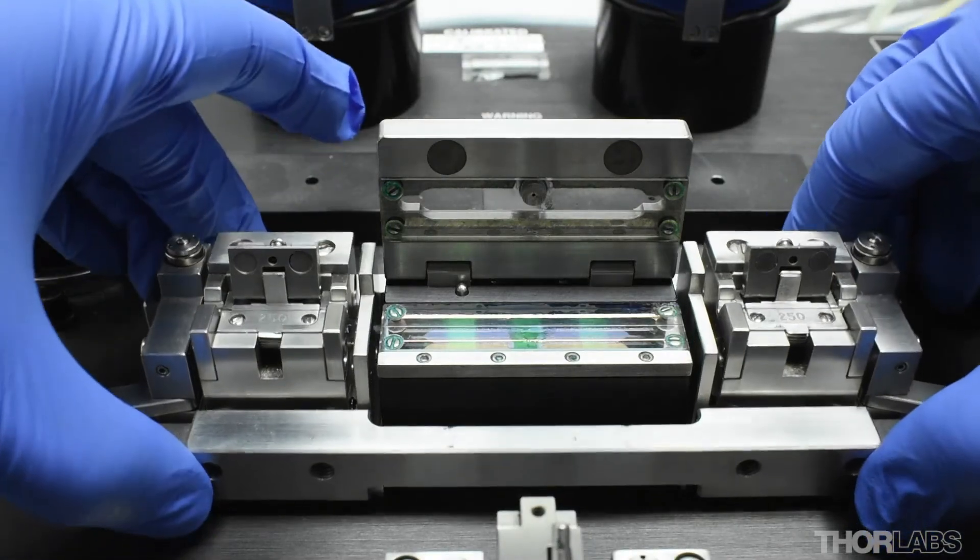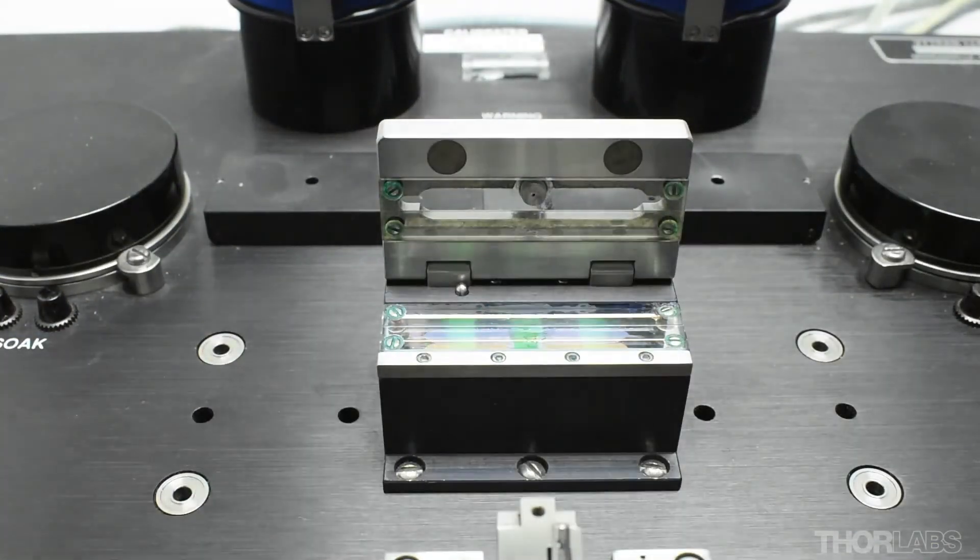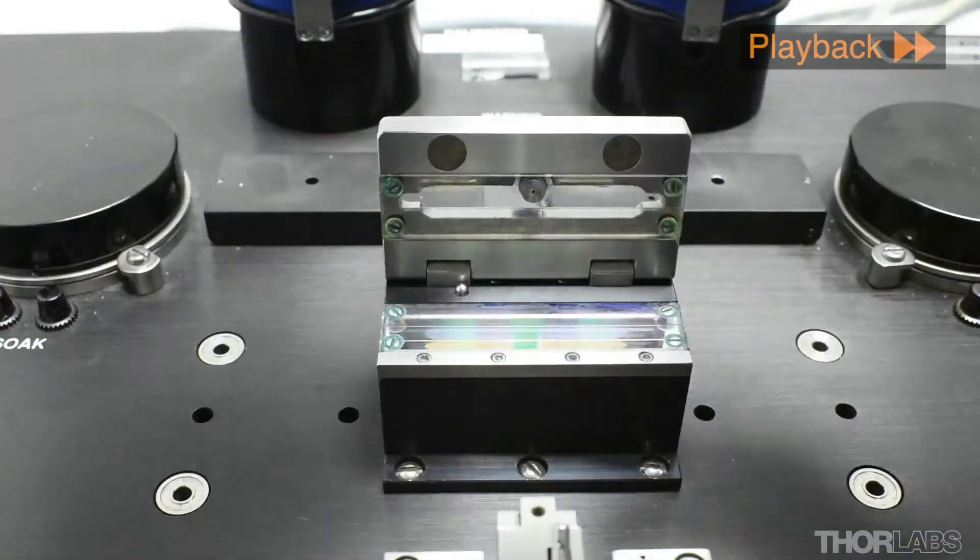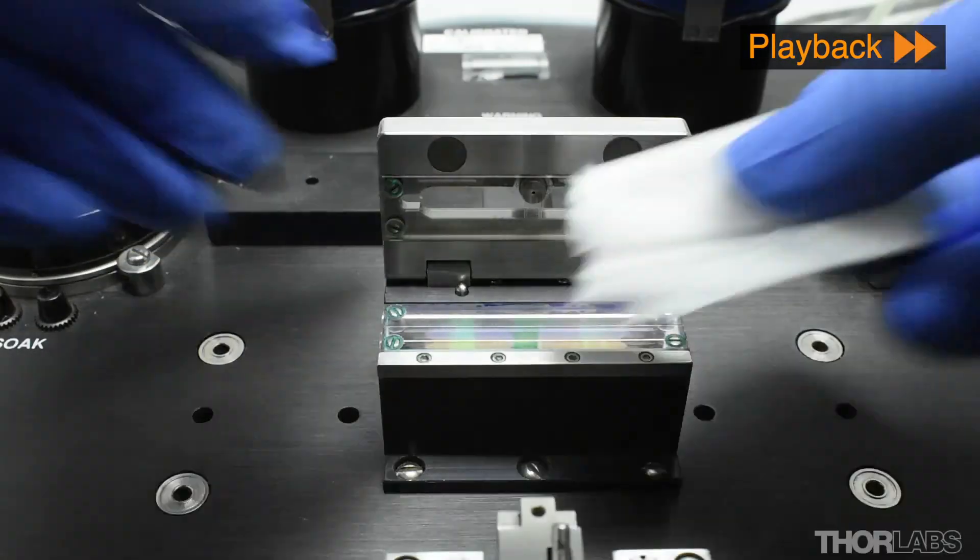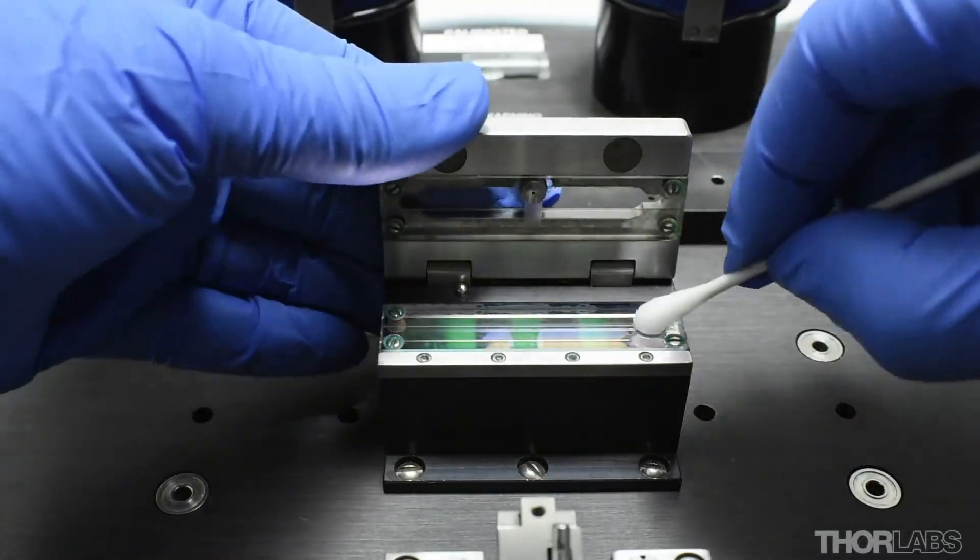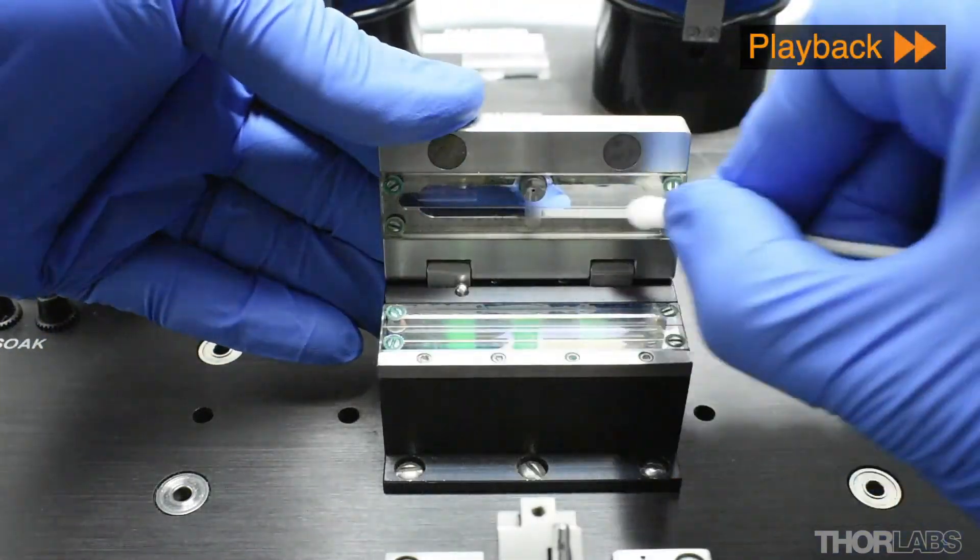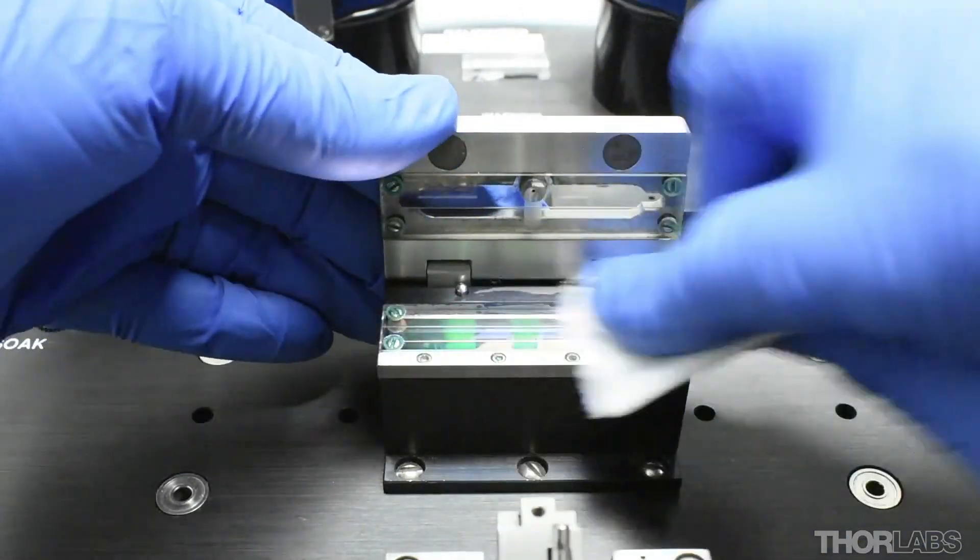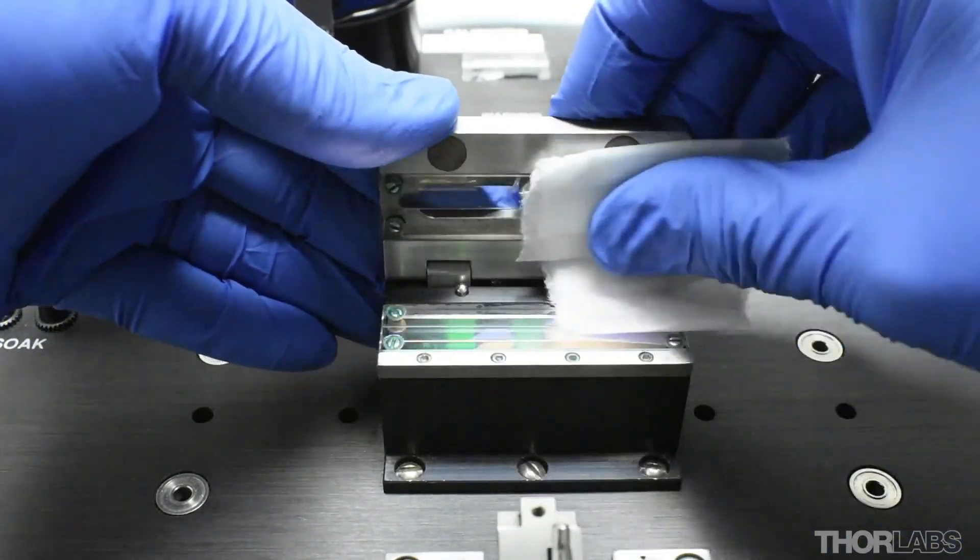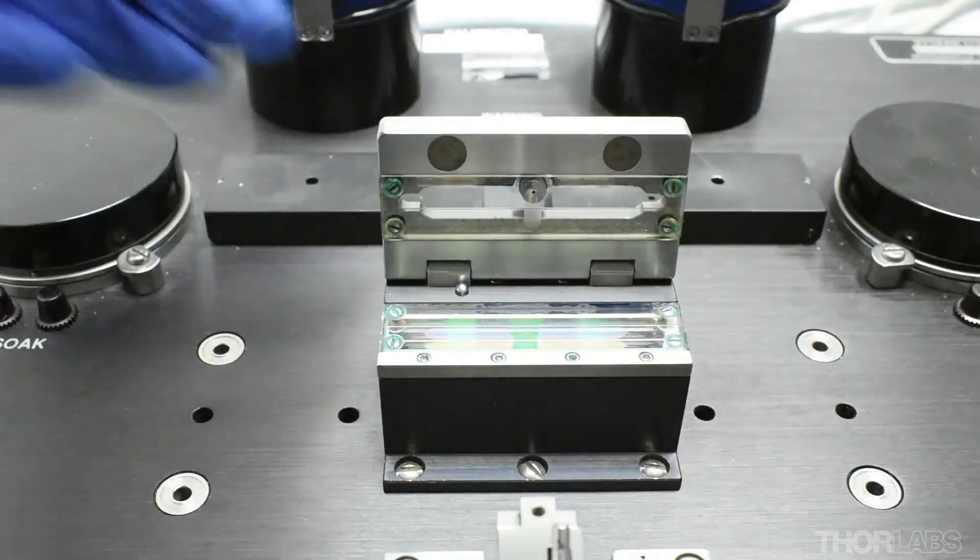The recoat mold now needs to be cleaned thoroughly so all the excess recoat material is removed. First dry wipe with a lint free tissue to remove as much material as possible from the top and bottom plates. Then using a soft applicator soaked in a solvent such as IPA or acetone clean off any remaining recoat material. Reliable and repeatable performance of the recoating procedure is highly dependent on the integrity and cleanliness of the mold.